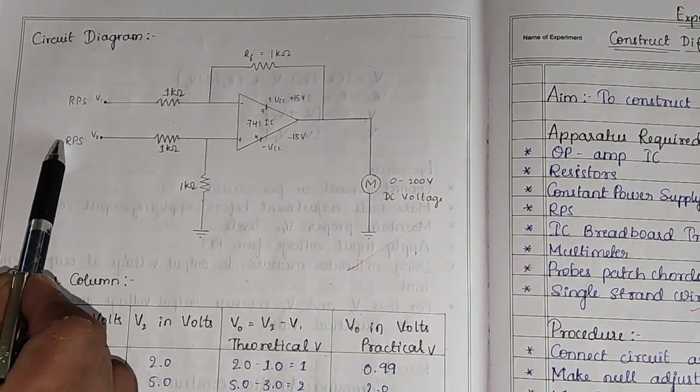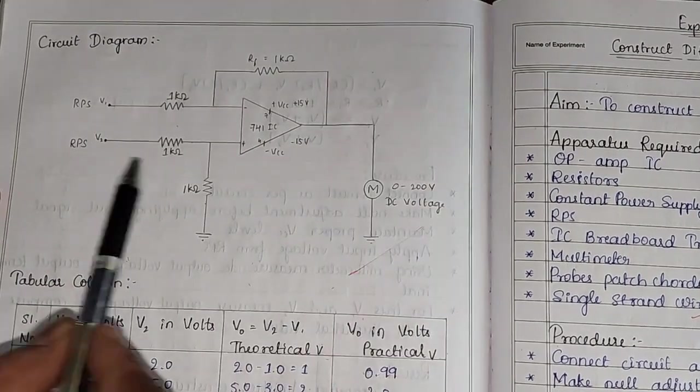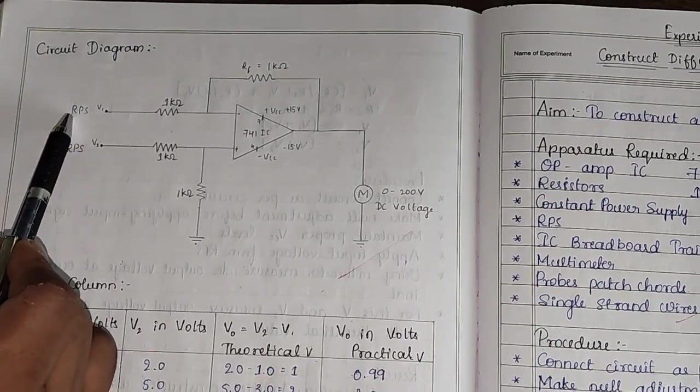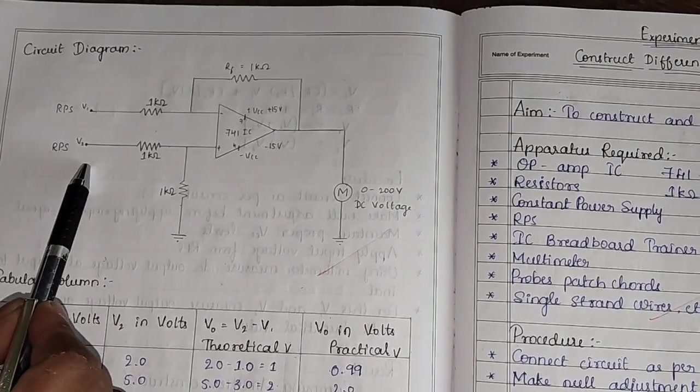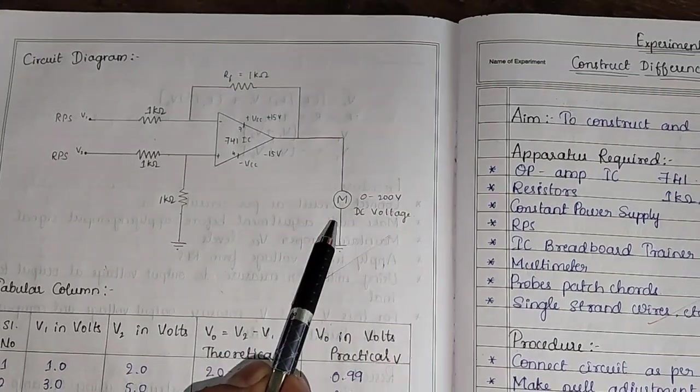What type of input we give at the input and what type of output we observe at the output. Here at V1 and V2 we apply DC voltage using regulated power supply and we measure the DC output voltage with the help of multimeter.